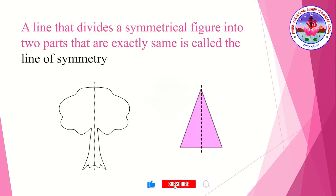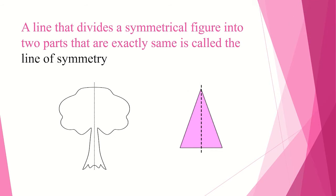A line that divides a symmetrical figure into two parts that are exactly the same is called a line of symmetry. Whenever you divide any object into two parts that gives you exactly the same, we call it a line of symmetry.